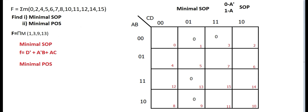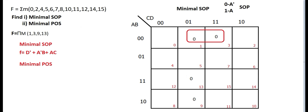Now for grouping the zeros: an octet is not possible, a quad is also not possible. These two zeros are adjacent and at the edges, so checking the opposite edge — it is a pair only. And again these two are adjacent zeros, so we can only make another pair. We have two pairs.